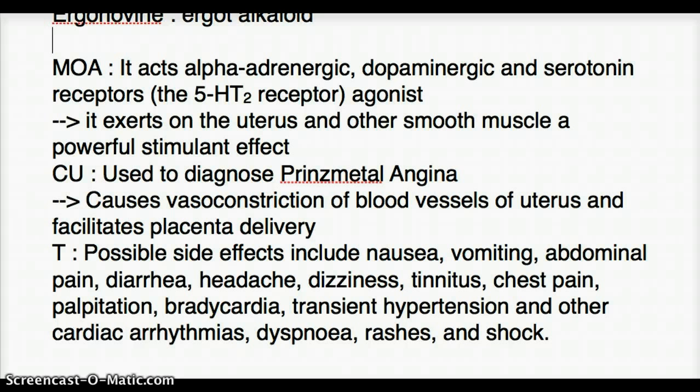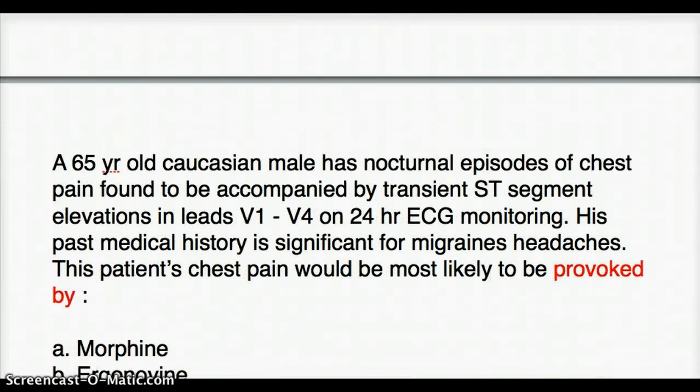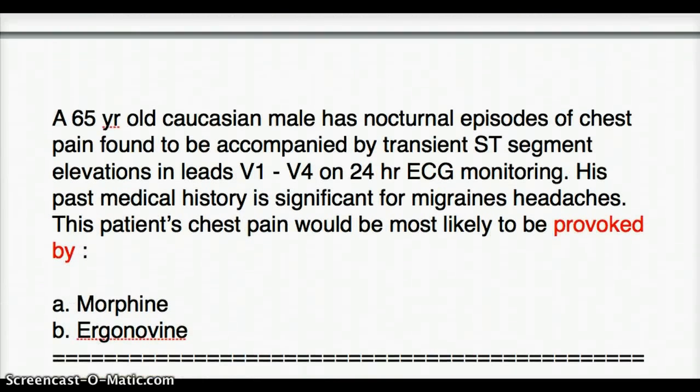Now let's take a quick example. In this question, there is a 65-year-old Caucasian male with nocturnal episodes of chest pain found to be accompanied by transient ST segment elevation in leads V1 to V4 on 24-hour ECG monitoring. When we read the question, the first thought should be MI, though Prinzmetal angina can also cause ST segment elevation. His past medical history is significant for migraine headaches.